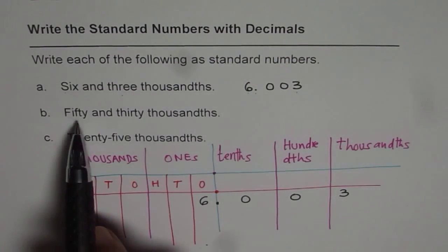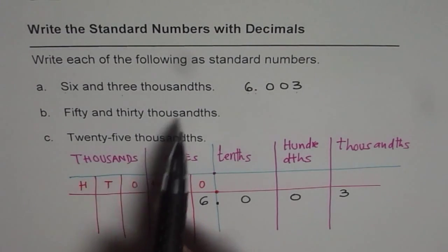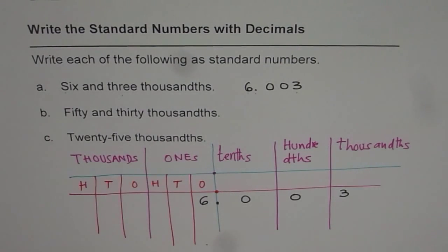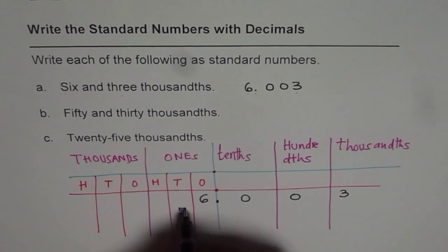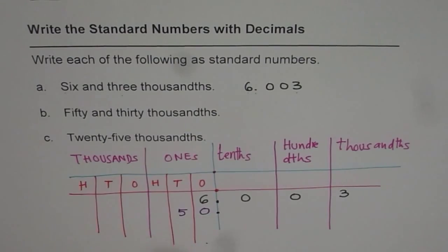The next one is fifty and thirty thousandths. Try to do it on your own. Fifty, so write fifty on the left side of decimal. So that is fifty and means decimal.